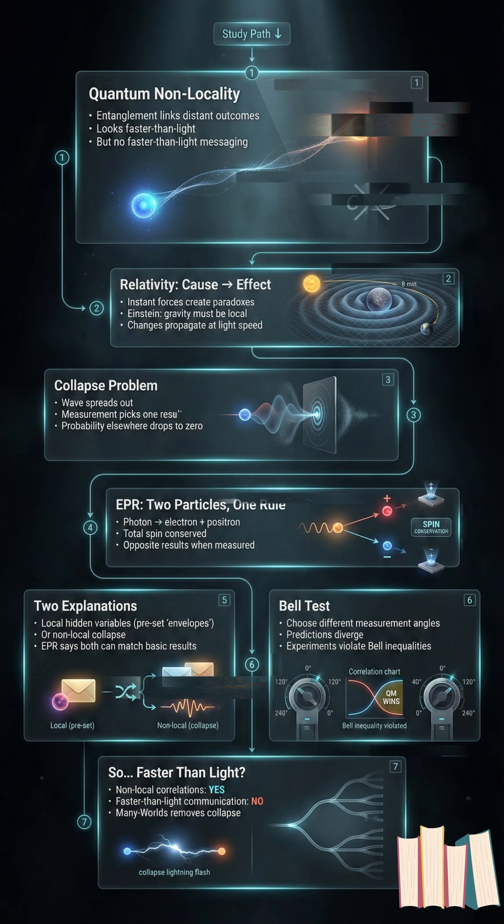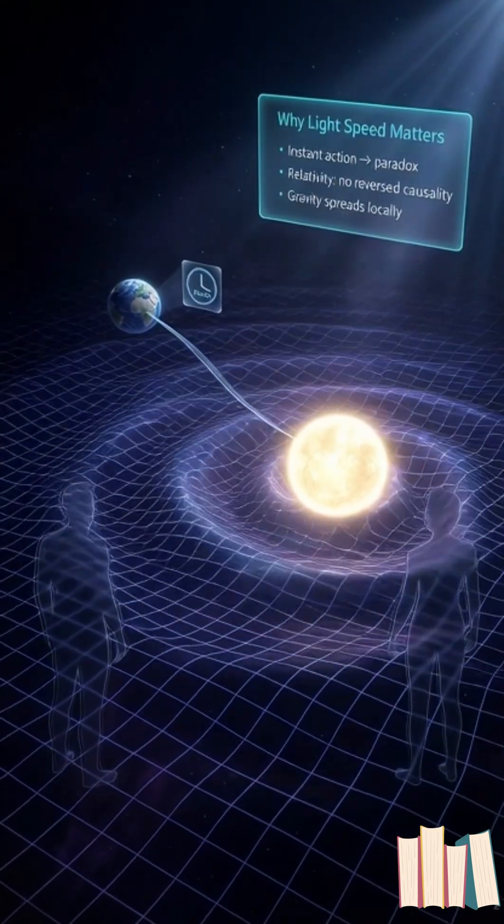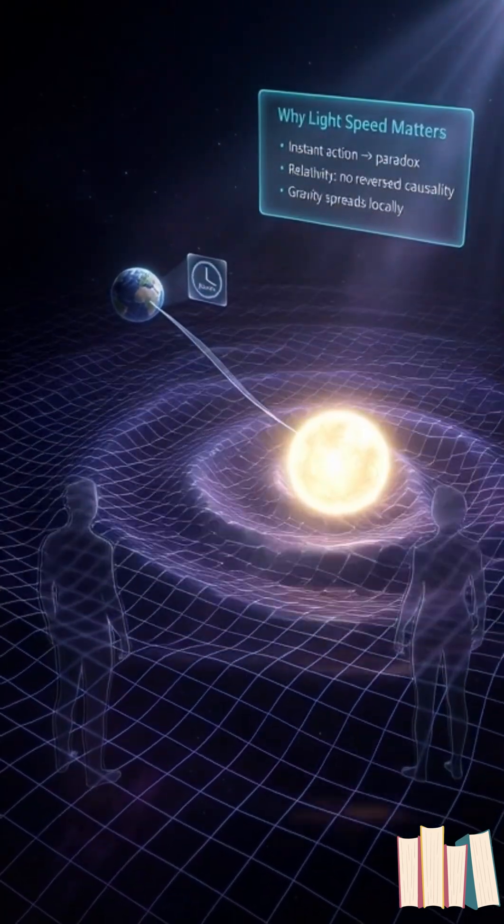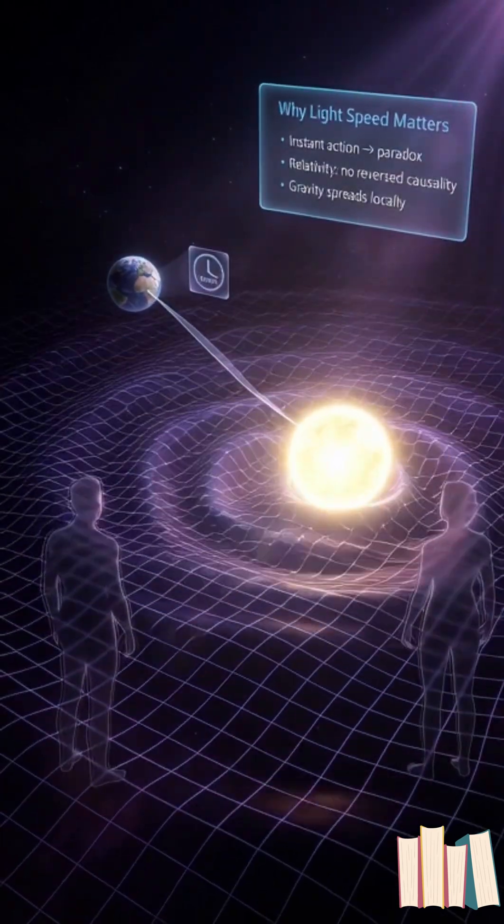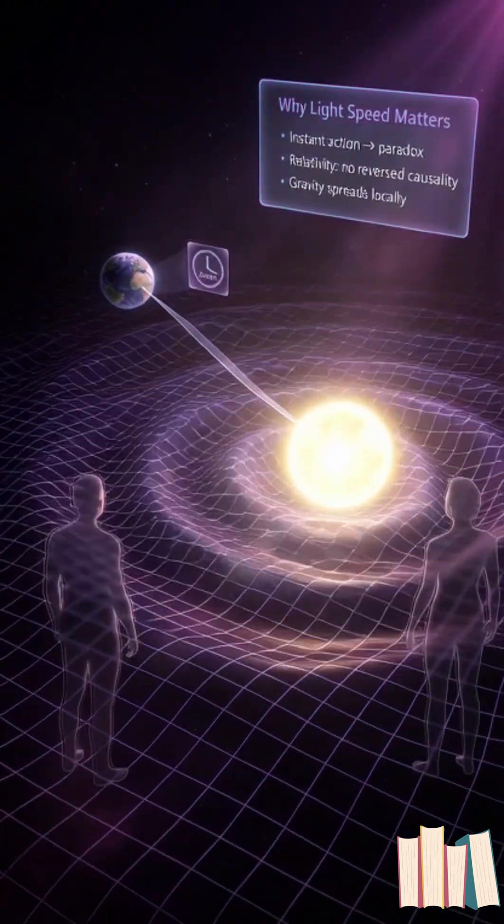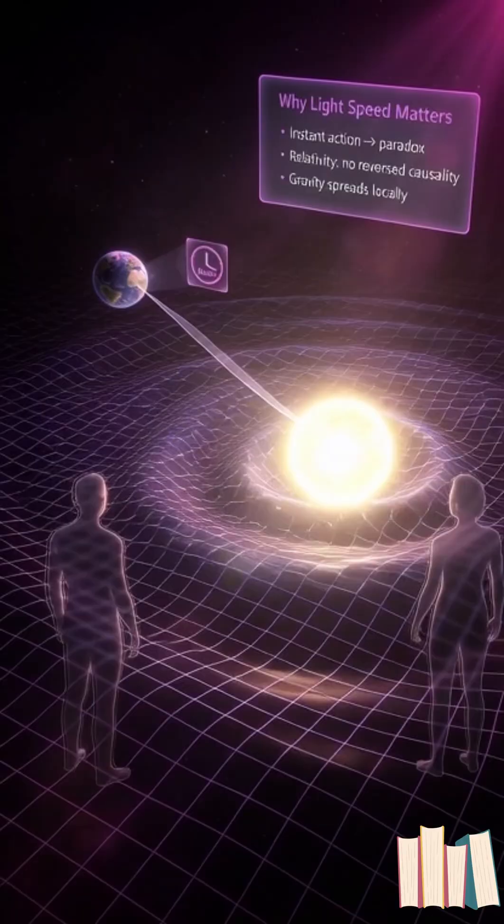Here's the context. Relativity isn't just light is fast. It's a rulebook for cause and effect. If something could act instantly across space, different observers could disagree about what caused what,